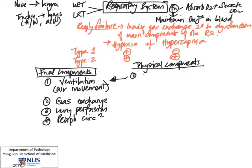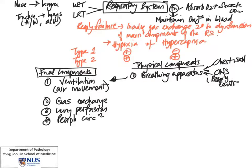For ventilation, what is required is the breathing apparatus. This includes the chest wall together with the nerves, and the central nervous system—the respiratory center that controls our breathing in the brain. Brain conditions can also give rise to decreased breathing and respiratory failure.